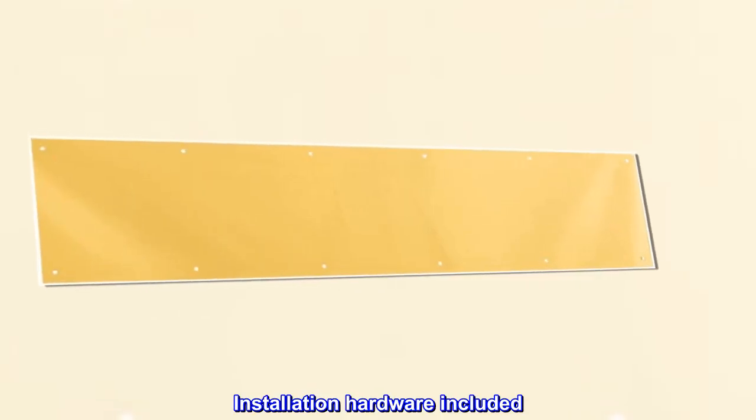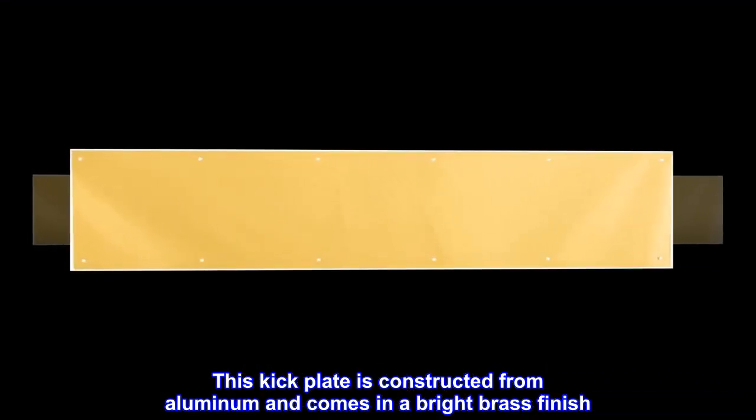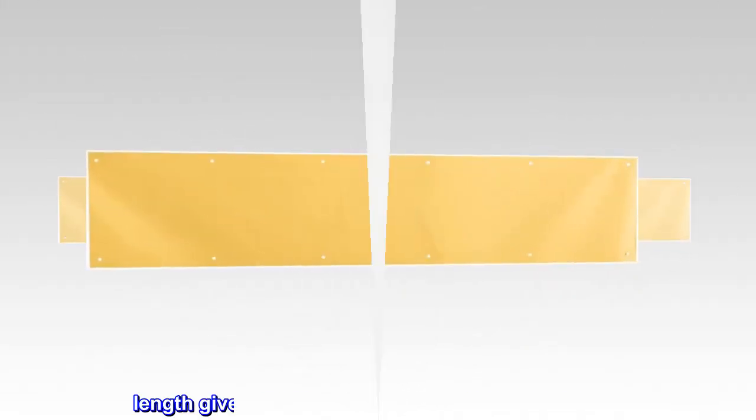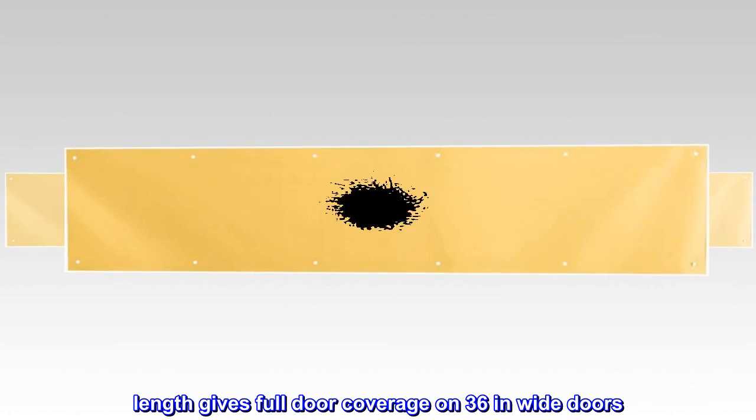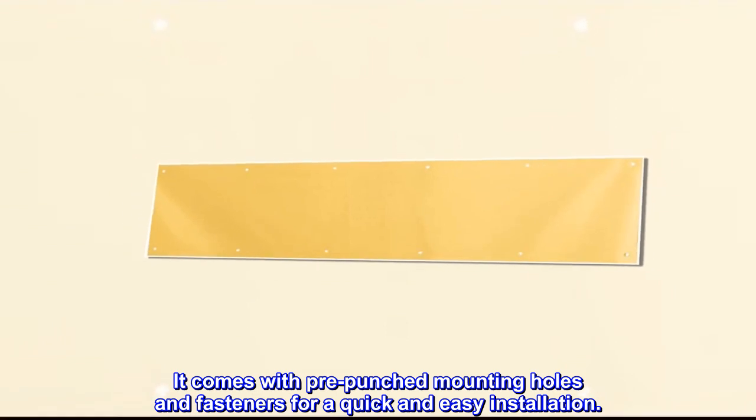Installation hardware included. This kick plate is constructed from aluminum and comes in a bright brass finish. The 34-inch length gives full door coverage on 36-inch wide doors. It comes with pre-punched mounting holes and fasteners for a quick and easy installation.